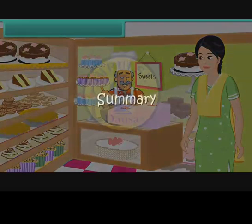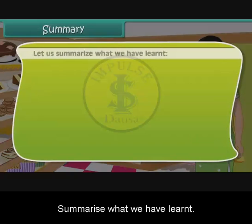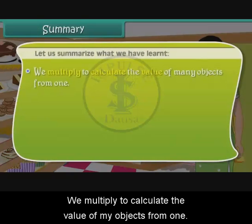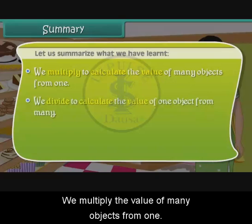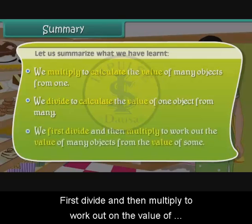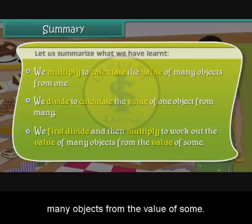Summary: We multiply to calculate the value of many objects from the value of 1. We first divide and then multiply to work out the value of many objects from the value of some.